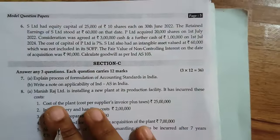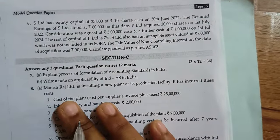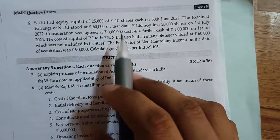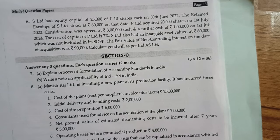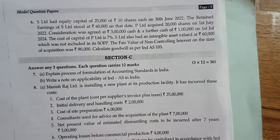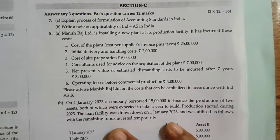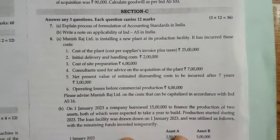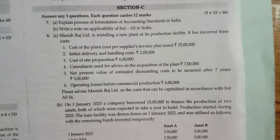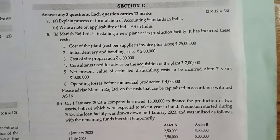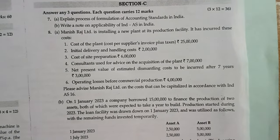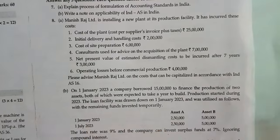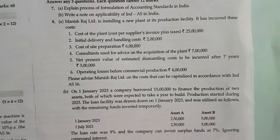Next, S Limited had equity shares and equity capital of 25,000. This involves goodwill and quantity. Section C has 12-mark questions; 5 questions, attempt any 3. Each question is divided into Part A and Part B, with 6 marks allotted to Part A and 6 marks to Part B.